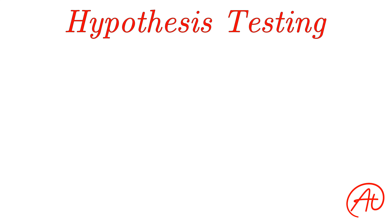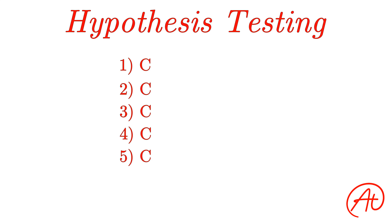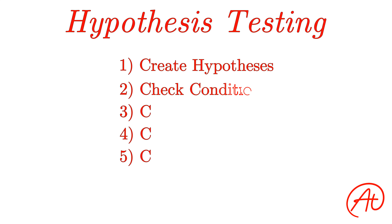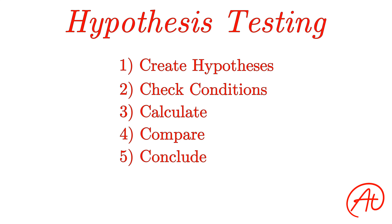To solve any hypothesis test, all you need to do is remember the 5 C's. First, you need to create your hypotheses. Then you need to check certain conditions are true to make sure your data is good. Next, you calculate your test statistic and/or p-value, then you compare your test statistic or p-value to your critical or alpha value, and finally conclude based on your findings. If that sounded like a lot, don't worry — I'm going to break down each of these steps to explain what they actually mean.